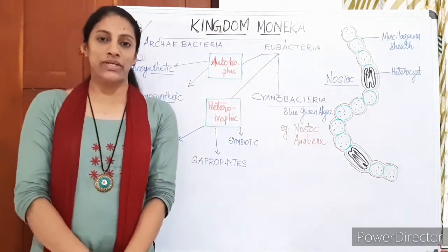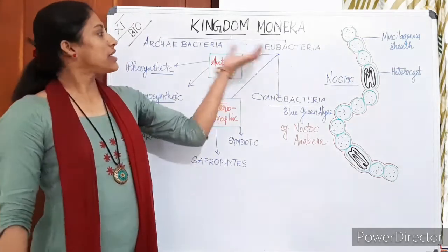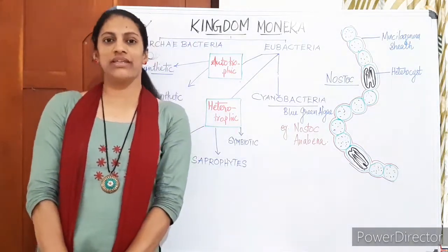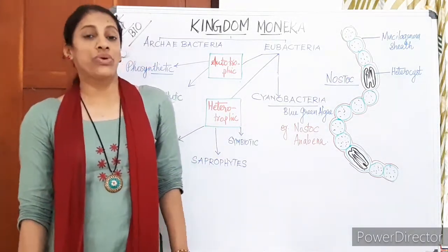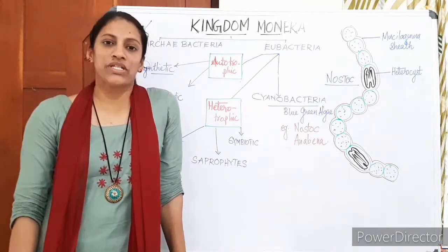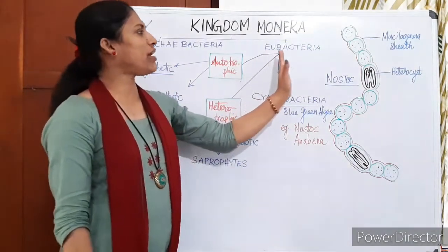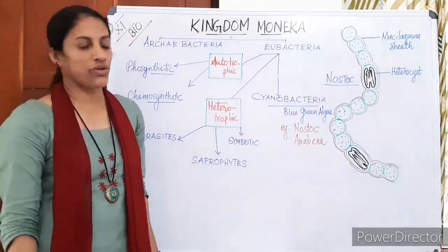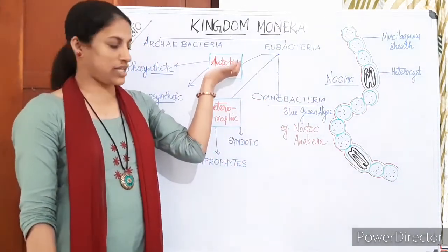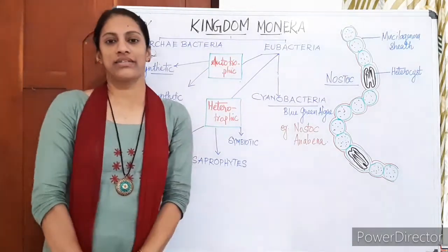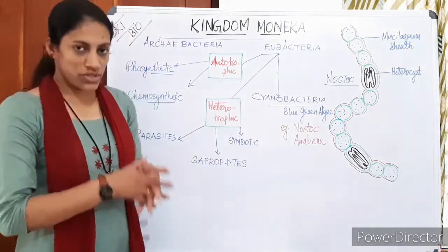Eubacteria are the true members satisfying all the features of Kingdom Monera. Archebacteria possess a specialized cell wall, and Eubacteria also have a cell wall made up of peptidoglycan. When we classify Eubacteria there are three major groups: cyanobacteria, autotrophic bacteria, and heterotrophic bacteria.